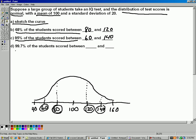And then part D, 99.7% of the students scored between what and what? So that would be 40 and 160. So that concludes the example of the normal curve.